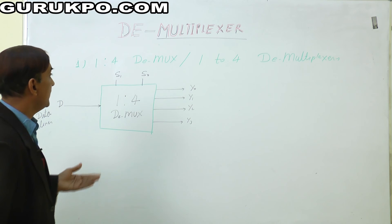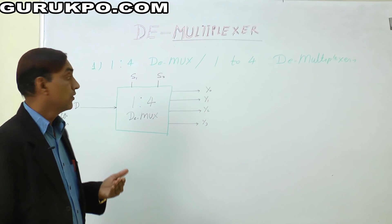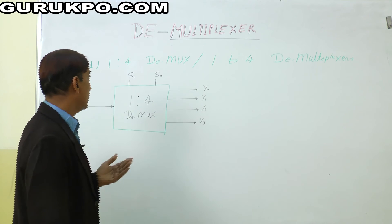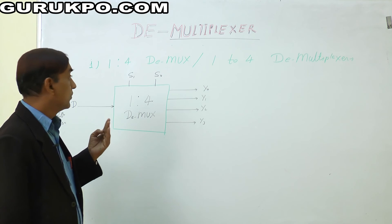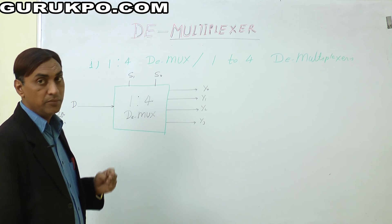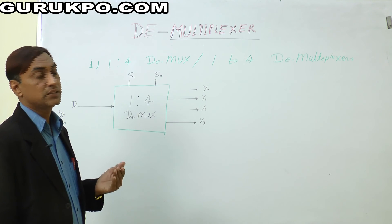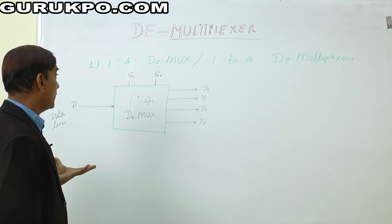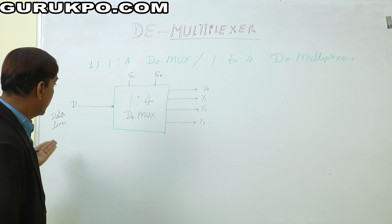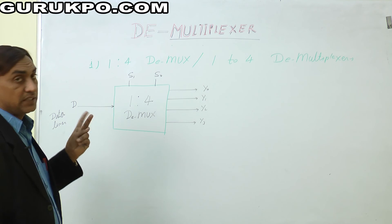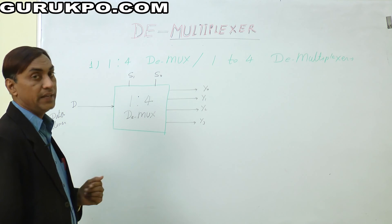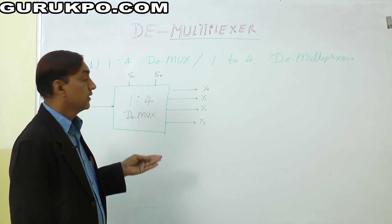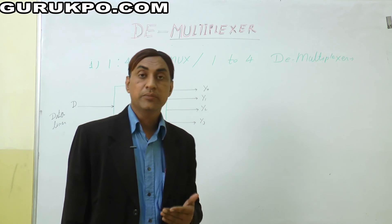The demultiplexer is the inverse of the multiplexer. We use three examples: first, 1 to 4 DEMUX (full name: 1 to 4 demultiplexer). The block diagram is simple: one data input line comes in, two data selectors S0 and S1 select the output, and the outputs are Y0, Y1, Y2, and Y3.